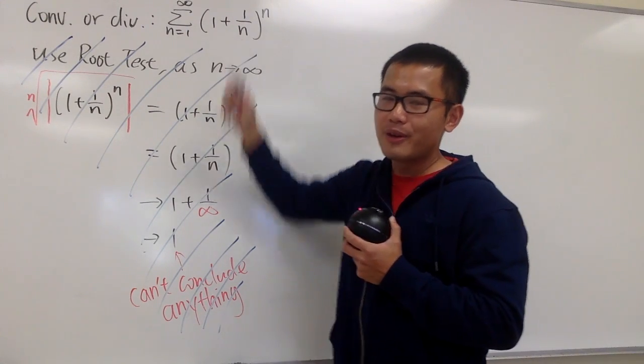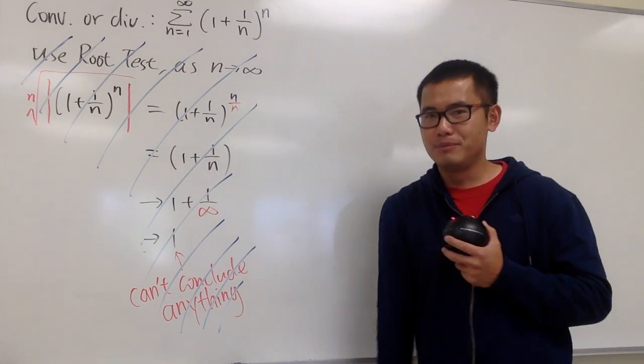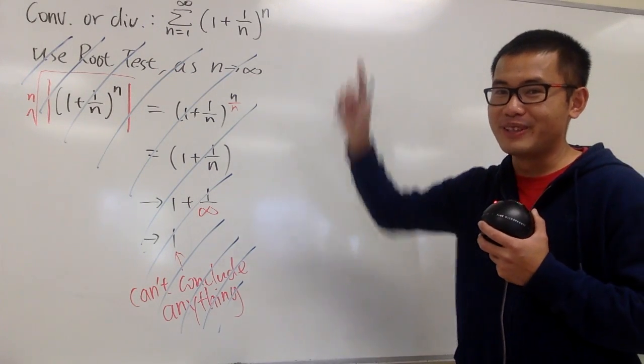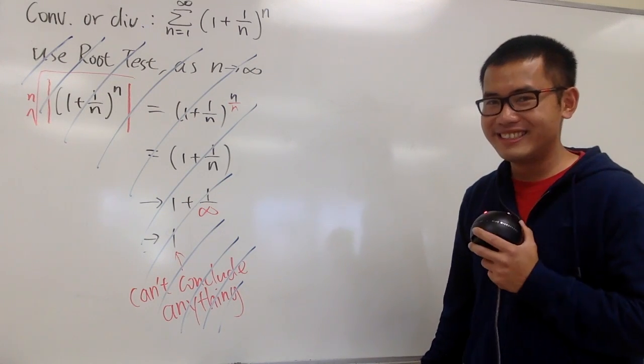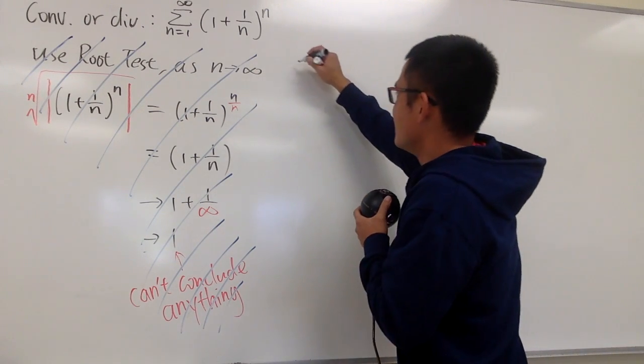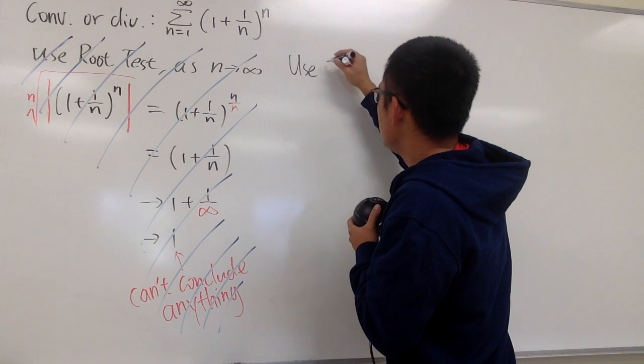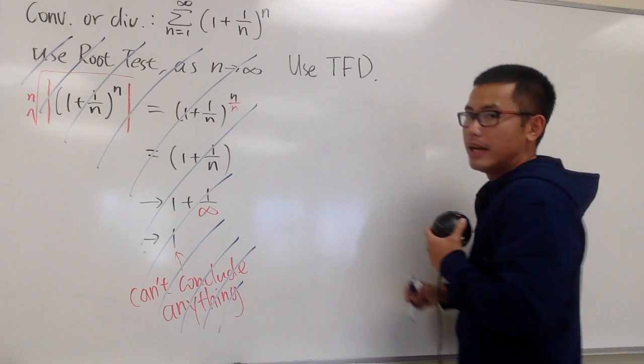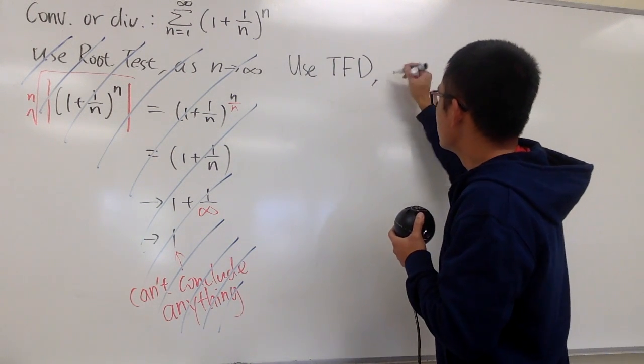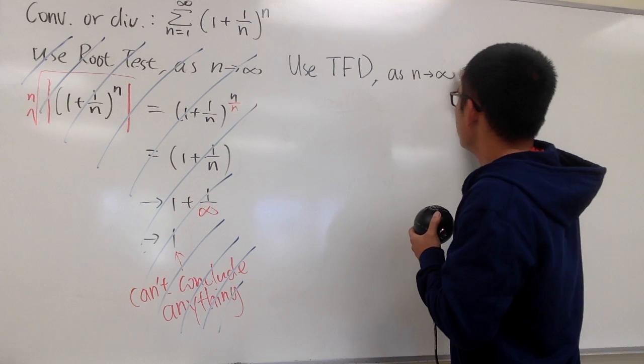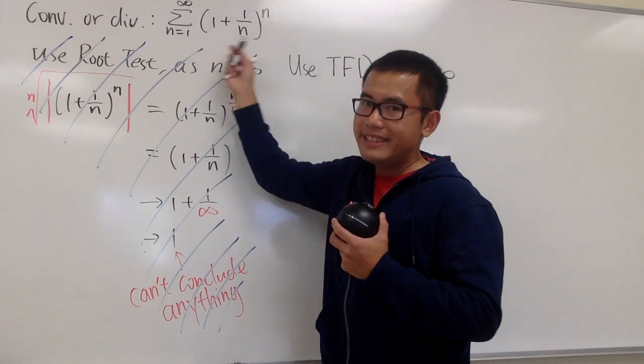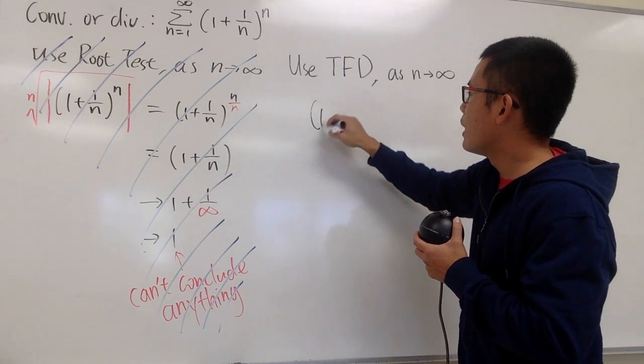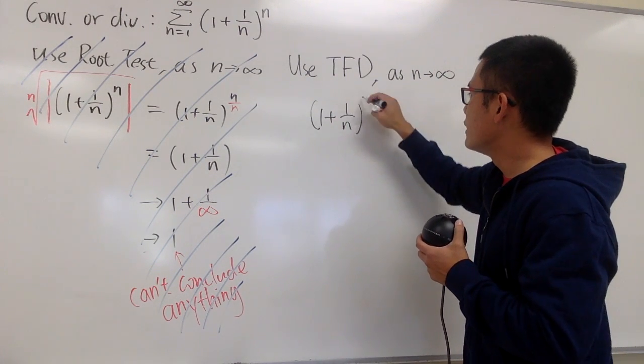Well, a_n, right? This part right here approaches e, which is not 0. And in fact, you could have a true conclusion right away by using the test for divergence. So that's actually the way to do it in this case. We are going to be using the test for divergence. And to do that, what we are going to do is we take the limit as n goes to infinity, just the original part right here. And we see that 1 plus 1 over n raised to the nth power.